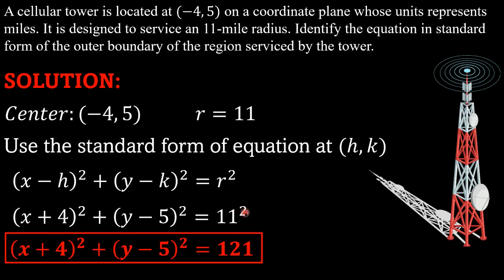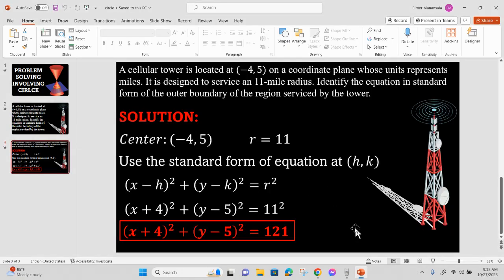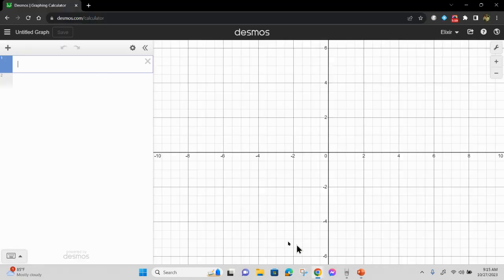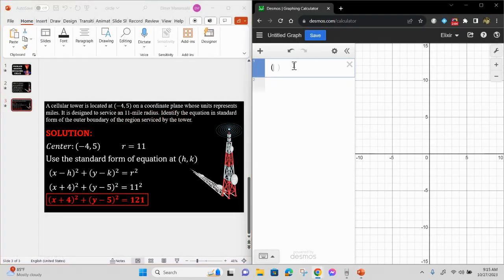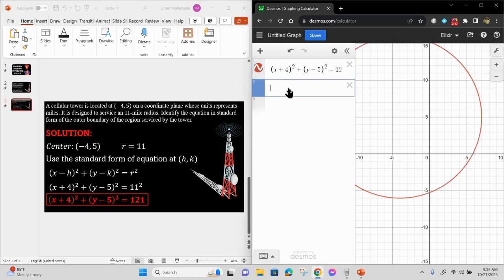Using this equation that we solved, we can graph this using Desmos. Let me input the equation we got: (x + 4)² + (y - 5)² = 121. Our center is (-4, 5). Let me verify that.